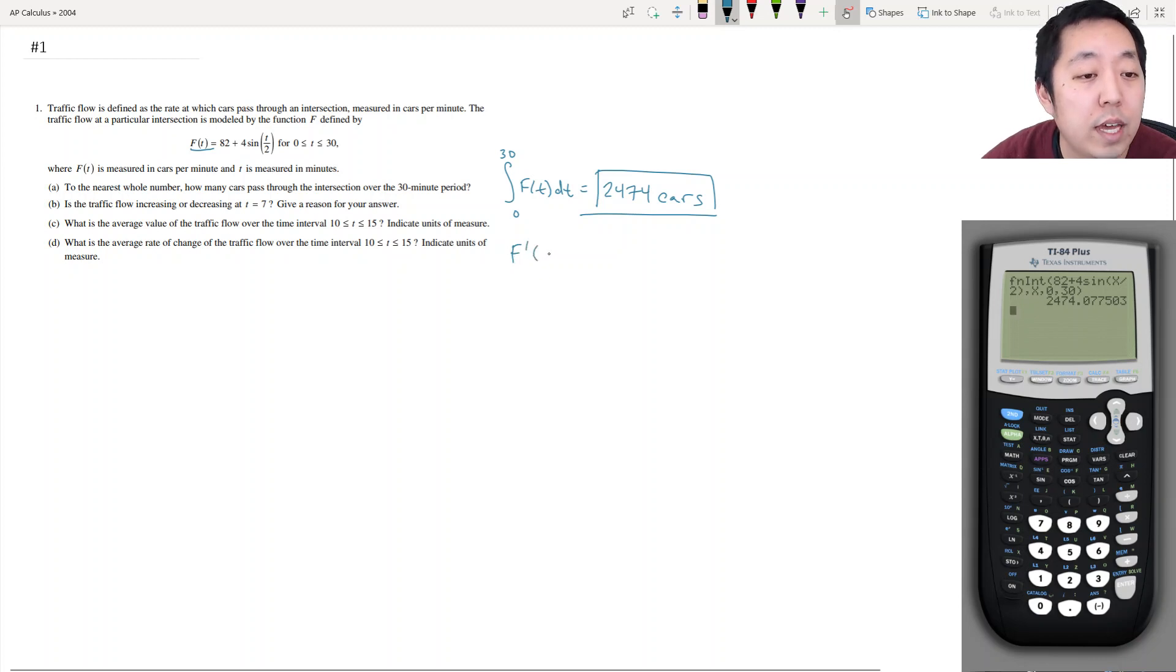Now you can compute the derivative by hand. f'(t): the derivative of 82 is zero. The derivative of 4 sine(t/2) is 4 cosine(t/2), but by chain rule I multiply by one half, which equals 2 cosine(t/2). When I plug in f'(7), I get 2 cosine(7/2), or 2 cosine(3.5), which equals negative 1.87, which is less than zero, so it's decreasing.